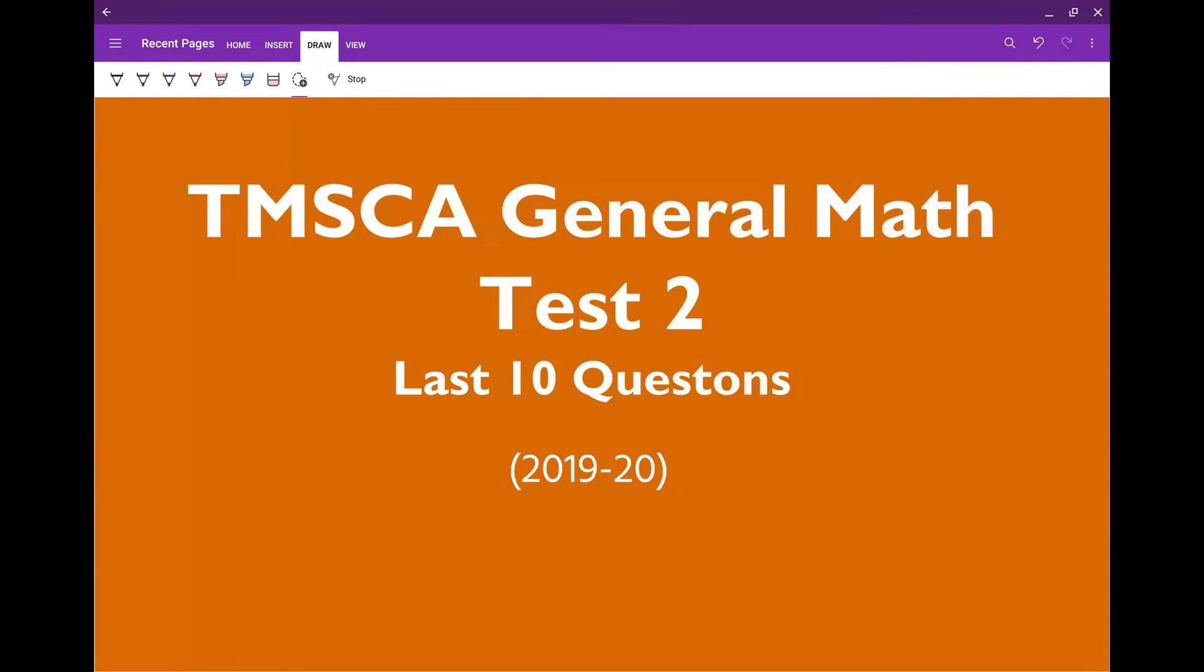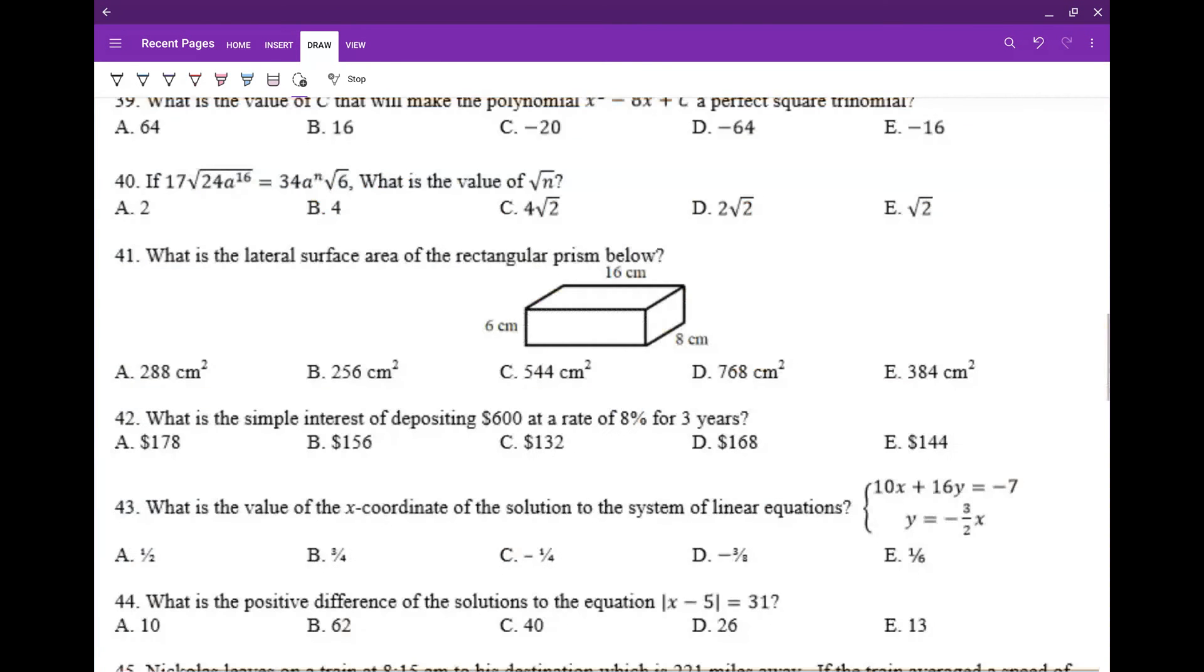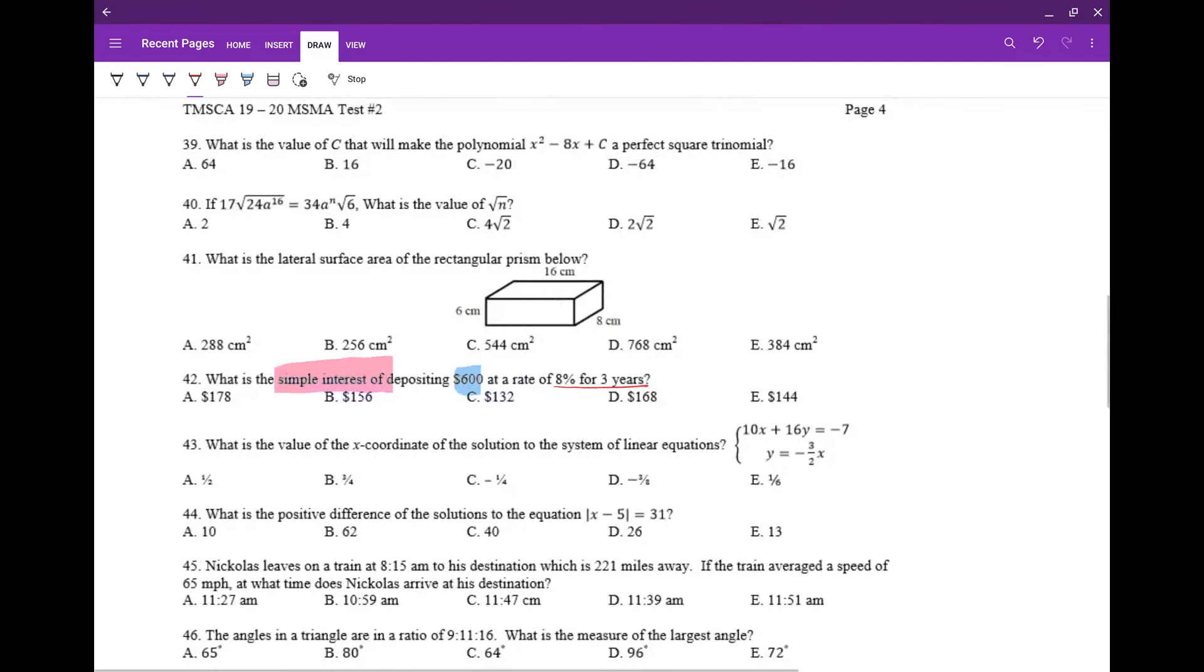Let's go to question 42 of general math test 2. Question 42 is about simple interest. Your deposit is $600, the rate is 8%, and you're doing it for three years. So this is simple interest.